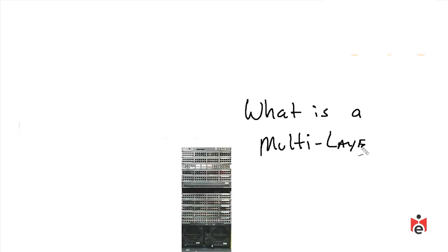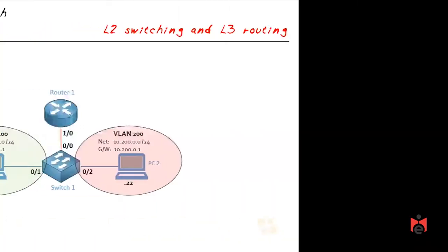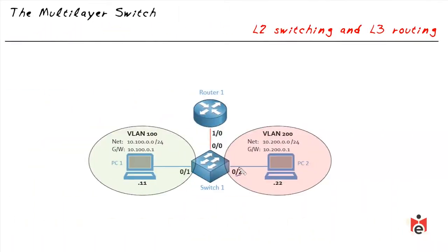To appreciate a multi-layer switch, we should recap the highlights of what a layer 2 switch and a layer 3 router do. In this topology we have two VLANs: VLAN 100 and VLAN 200. It's common to have a unique IP network address for each subnet. VLAN 100 uses network 10.100.0 and VLAN 200 uses IP subnet 10.200.0.